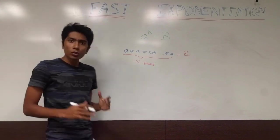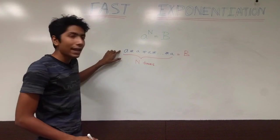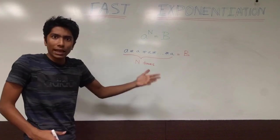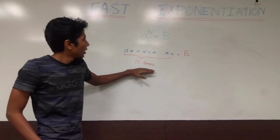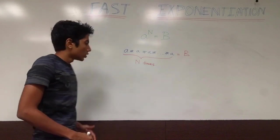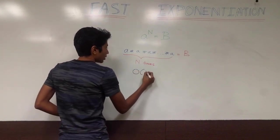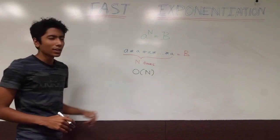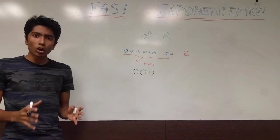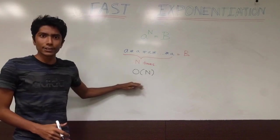So of course the most brute force way to do this is to take a, multiply it with a itself, n times till you get the result. So this is a slow approach which is order n time complexity. That's a little too slow and usually in contests you are looking for much better than this.